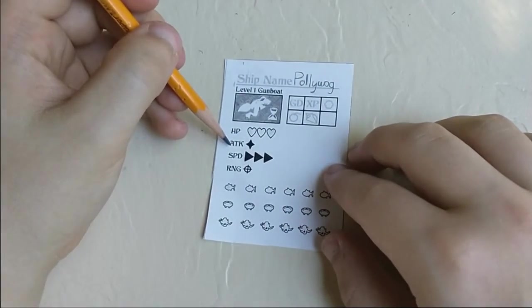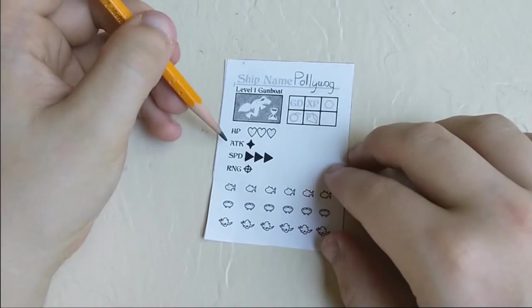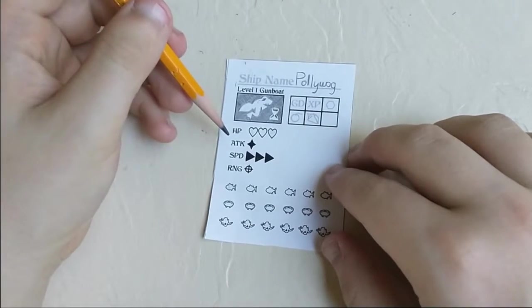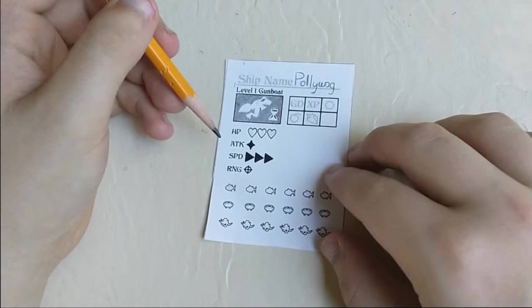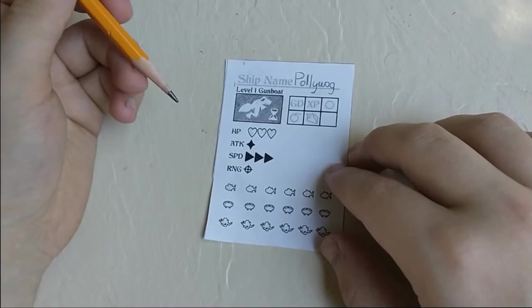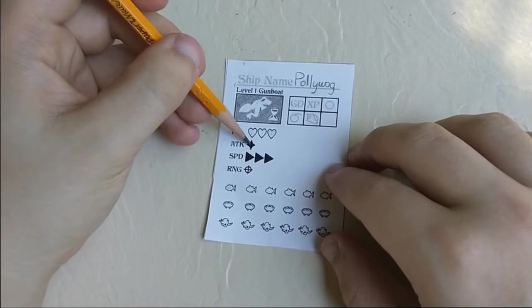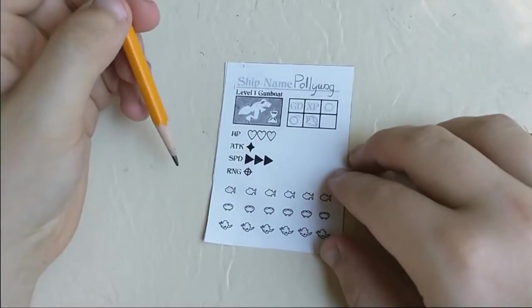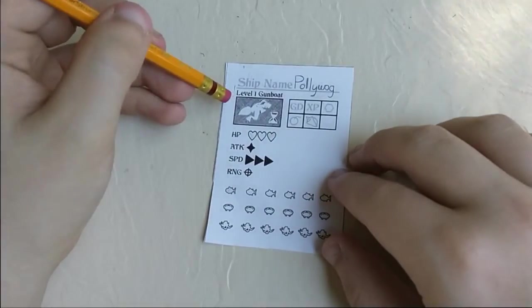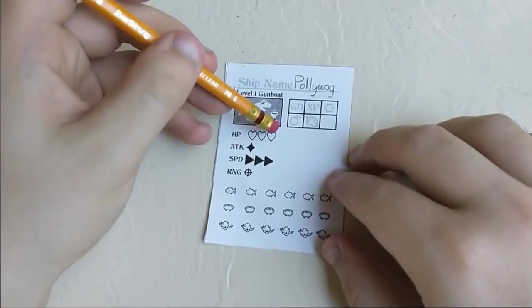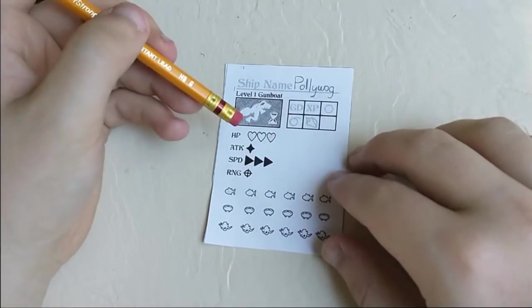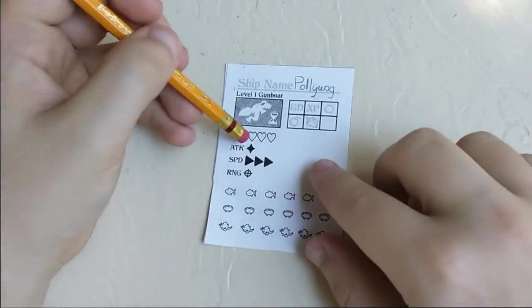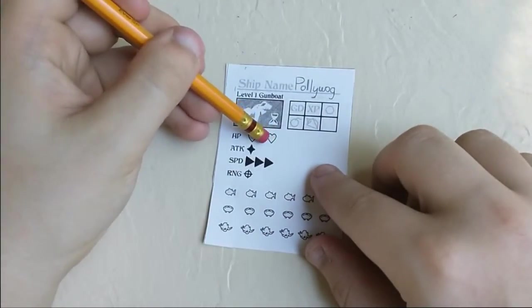Attack is how many hearts you can take away from another player, or how many hearts that you destroy on another player. So a gunboat can only do 1 damage at a time. So if my ship was hit by a gunboat, which has an attack of 1, then I would subtract 1 heart. But maybe a level 2 schooner has an attack power of 2, so I would subtract 2 hearts from my HP.